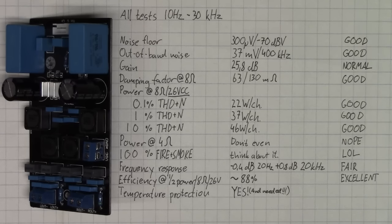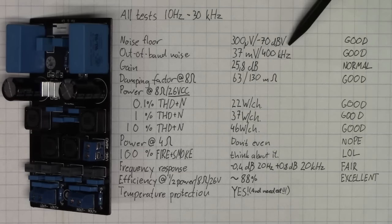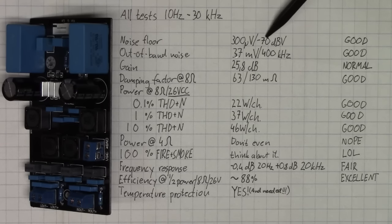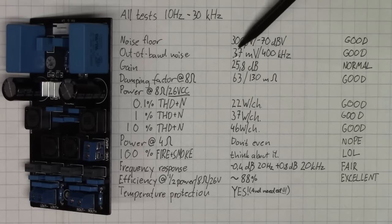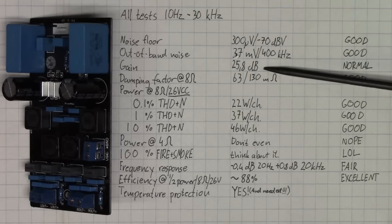And that gives us a summary, which looks something like this. So, we've got a noise floor which is at 300 microvolts, or minus 70 decibel volts, which is good. For an amplifier module like this, you certainly can't complain, although it isn't really up there with the Hi-Fi amps, which go up to minus 80 dBV and beyond. The amplifier chip is specified for minus 80 dBV A-weighted, and we are doing unweighted measurements here. So, I'd wager this lives up to roughly spec. The out-of-band noise, 37 mV at 400 kHz, pretty good, nothing that's going to be an issue. Gain, 25.8 dB, pretty normal for an amplifier with this power class, nothing out of the ordinary.